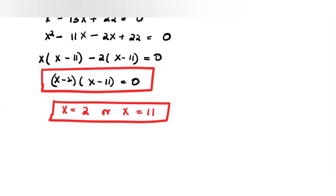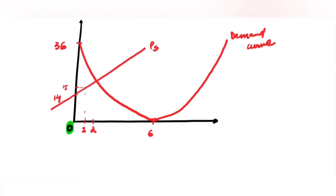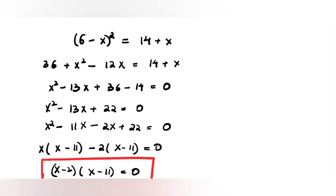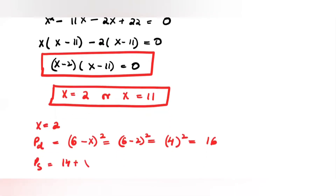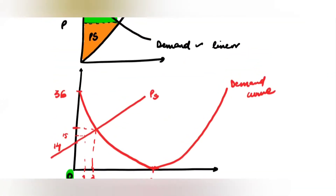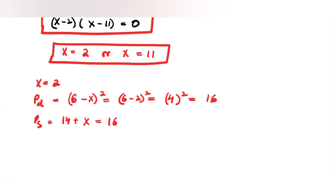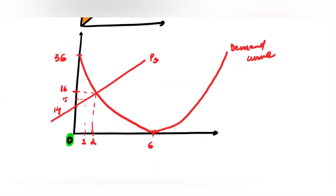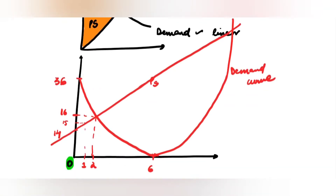Now think about this: when X=2, the price from the demand side is (6−2)² = 16, and from the supply side 14 + 2 = 16 — they intersect at price 16. The other intersection is when X=11, somewhere further along the curve.